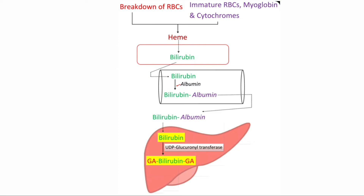Bilirubin which is formed is slightly soluble in the plasma, and therefore it is transported to the liver by binding non-covalently to albumin as a bilirubin-albumin complex. Bilirubin released from this complex enters into hepatocytes and it binds to an intracellular protein, particularly the protein called ligandin.